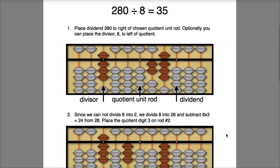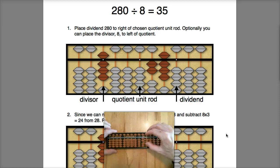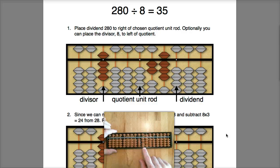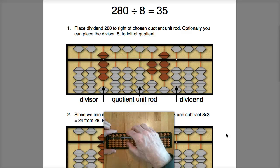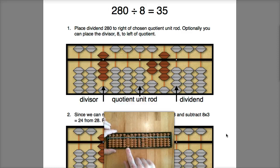All right, let's take a look at a first example. In this first example we have 280 divided by 8, so I'm going to enter 280 on my Soroban here, and I'm going to choose this as my quotient unit rod, and I'll place my divisor 8 over here to give me some space, but it's not necessary to place the divisor on the Soroban if you don't wish to.